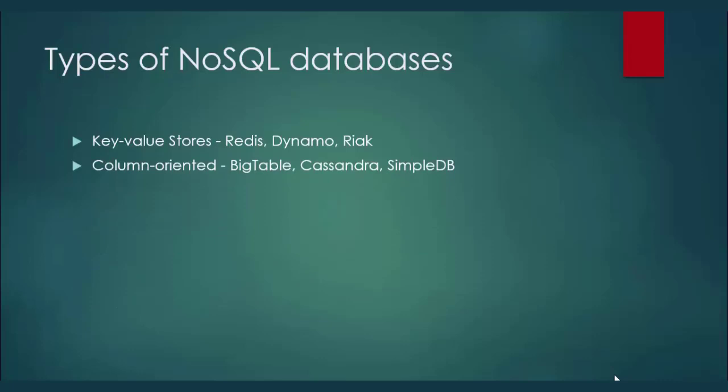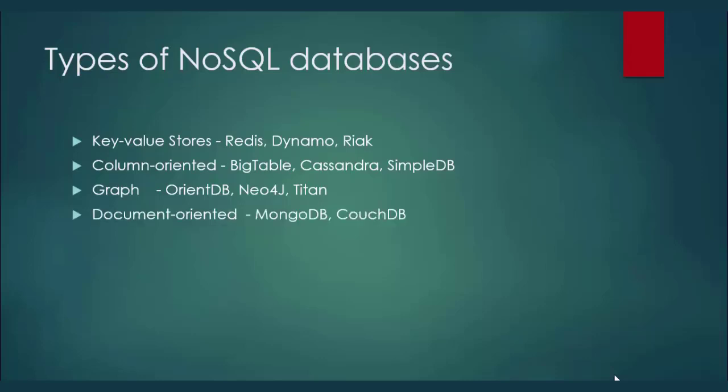The next type is column-oriented databases. In this kind of database, we store data in columnar fashion — data is stored in columns with the reference of a row ID. Examples are Bigtable, Cassandra, and SimpleDB. Graph-oriented databases are the next type, where we store data in a graphical manner. Examples are OrientDB, Neo4j, and Titan.